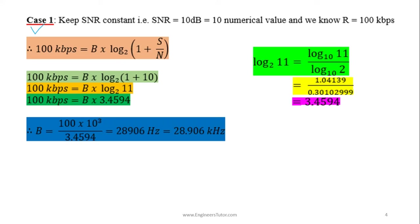In Case 1, we keep SNR constant at 10 dB and the target data rate constant at 100 kbps, and we calculate the bandwidth required. After performing the numerical calculations — converting logarithms from base 2 to base 10 — the required bandwidth comes out to 28.9 kHz. If we have this bandwidth, even though the signal-to-noise ratio is low, we can still achieve the 100 kbps data rate.